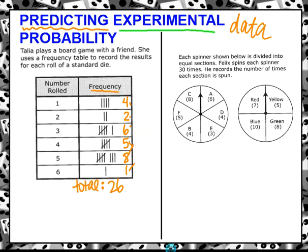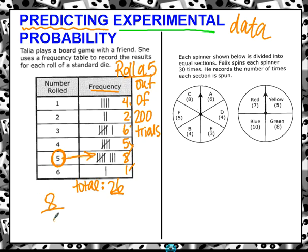If we're making a prediction, a prediction means you use the data you have and you predict how many times it would happen based on your data. So let's make a prediction about how many times they would roll a five out of, let's say, 200 trials. If they were to do this experiment 200 times based on the data, how many times would they roll a five? The first thing we have to look at is how many times they actually rolled a five right now. At this point they rolled a five eight times out of the 26 total times.